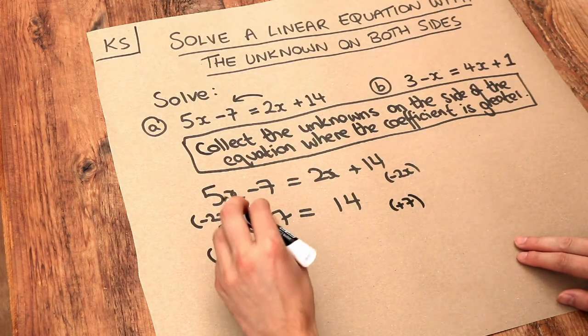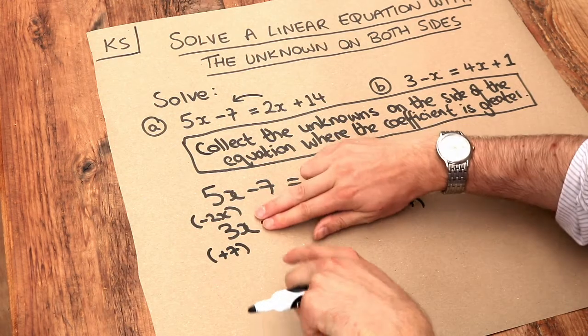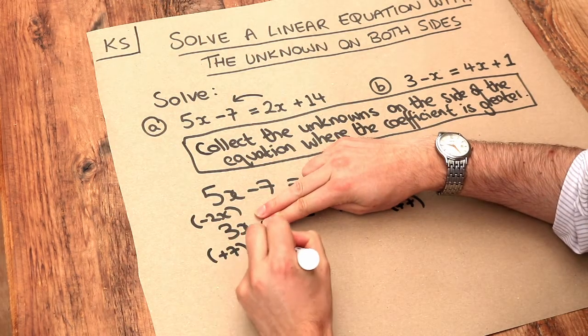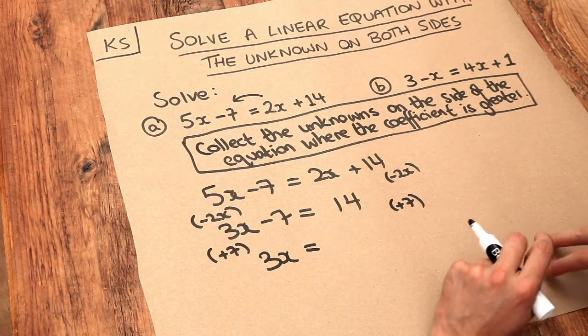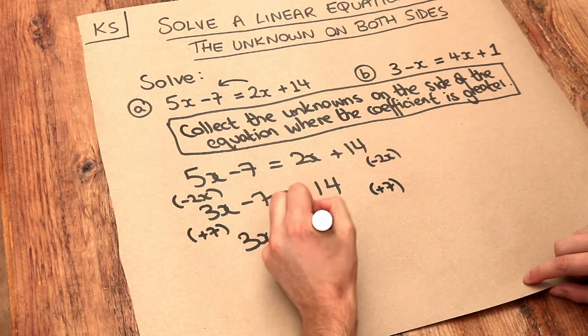What you do to the left-hand side, you do to the right. The plus 7 gets rid of that minus 7 on here, just leaving 3X. And we have to plus 7 to the right-hand side as well, which gives us 21.